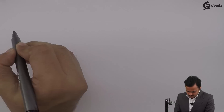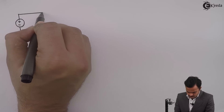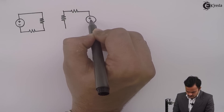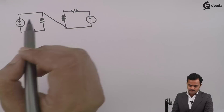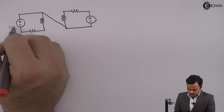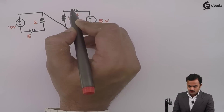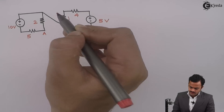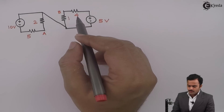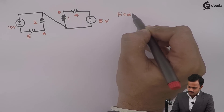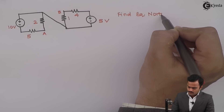In this video we are going to see the application of Norton's theorem to solve a problem. In this circuit I have a voltage source of 10 volt, one more voltage source of 5 volt, and resistances of 5, 2, 1, and 4 ohm. These are the terminals A and B across which we have to replace the entire circuit as a Norton's equivalent circuit.